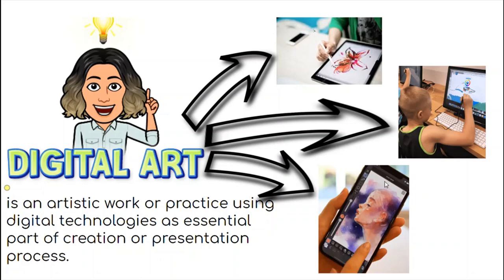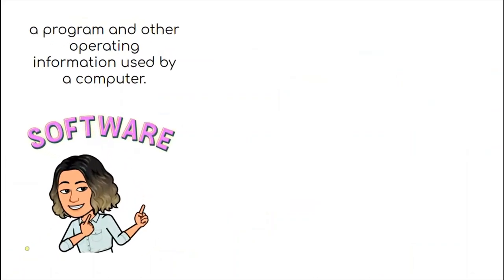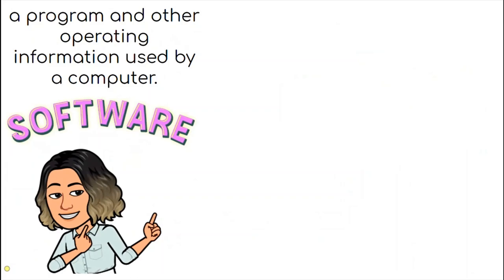So in these three examples, you can notice that they all used technology. And not only technology — we also need to use applications, or what we call software. Software is a program and other operating information used by a computer. These are the programs or applications with which we can create art using technology.